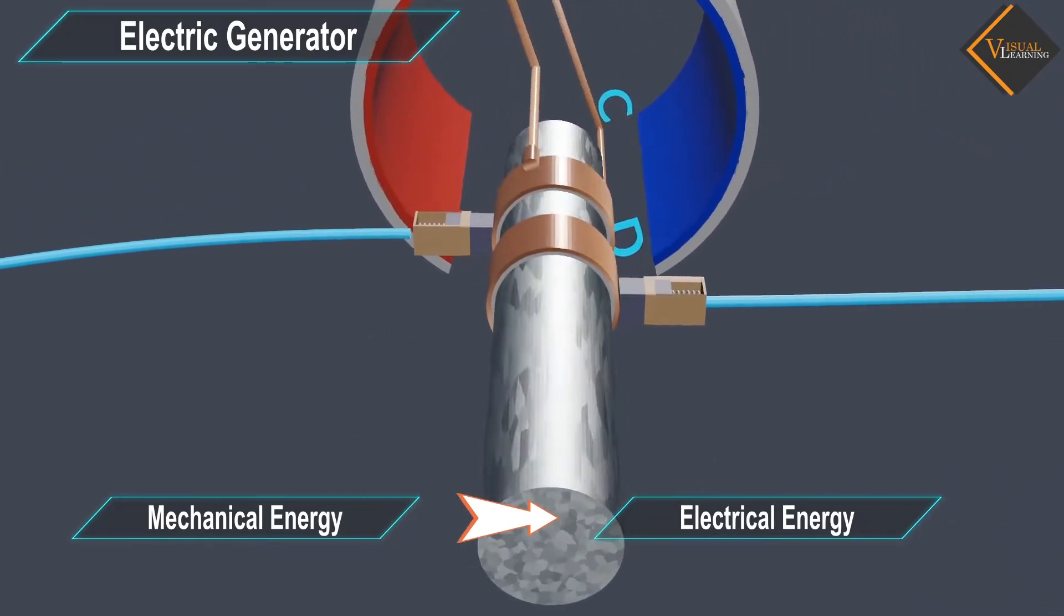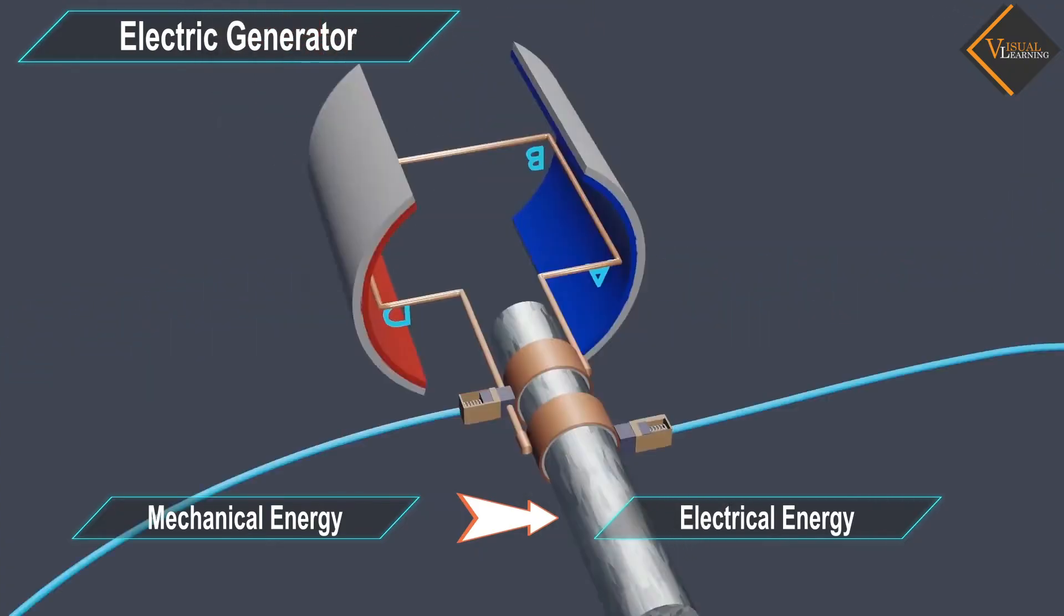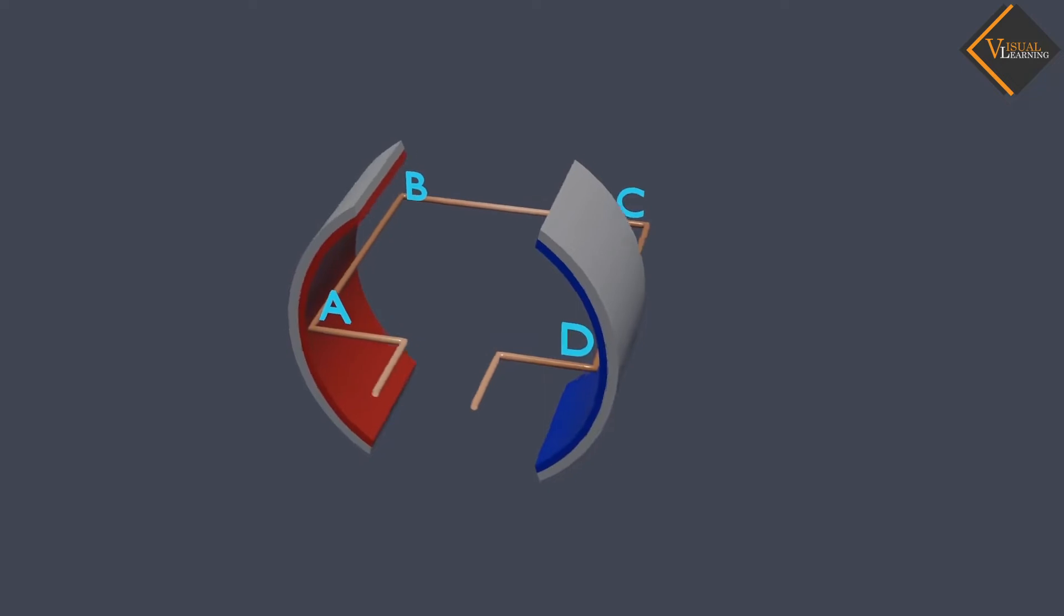Let's understand how does an electric generator work. An electric generator consists of a rotating rectangular coil ABCD placed between the two poles of a permanent magnet.